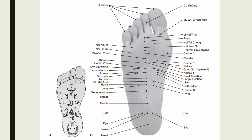The mouth point is located one unit distal to the nose point, or three units from the heel on the midline. The throat point is located 0.6 unit distal to the mouth point, or 3.6 units from the heel. Indications of the throat point include fever, sore throat, tonsillitis, and upper respiratory infections.